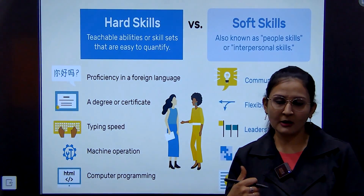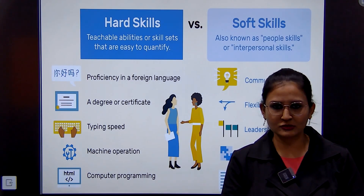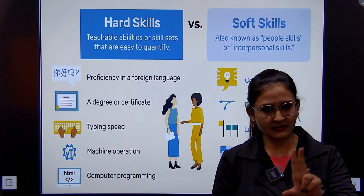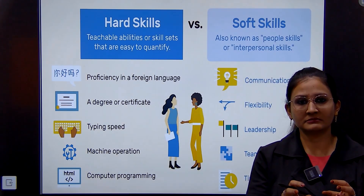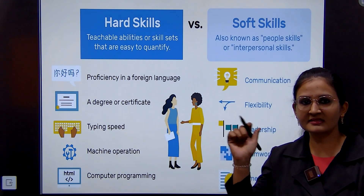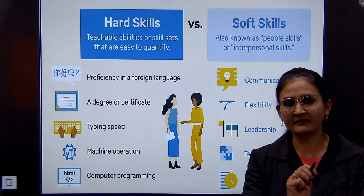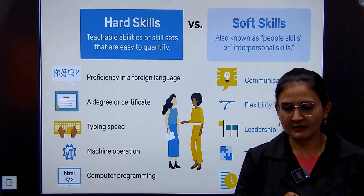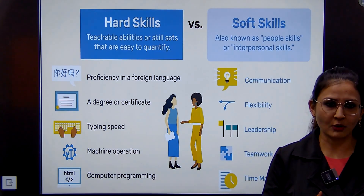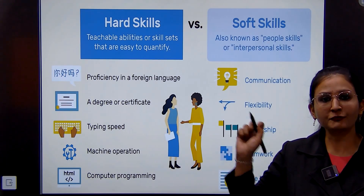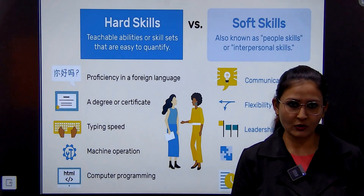Moving ahead, now we will see the difference between hard skills and soft skills. Hard skills are the teachable abilities or skill sets that are easy to quantify — the skills which you are learning or earning. For example, proficiency in a foreign language is a hard skill because you have learned it. A degree or certificate, such as a BBA or MBA, is also a hard skill.